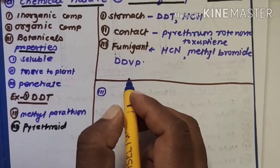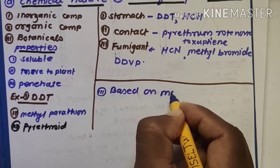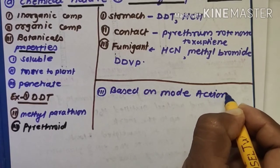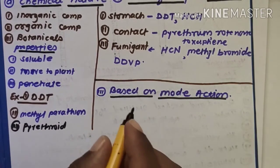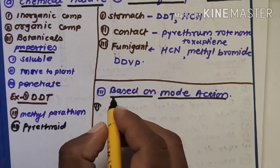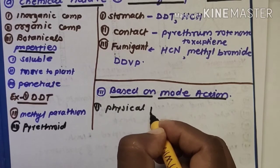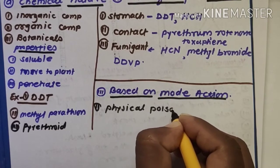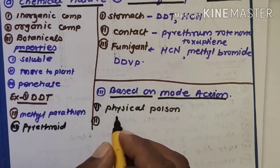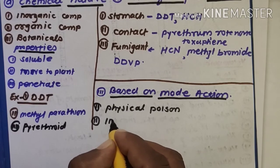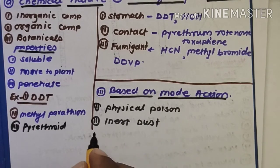The third important subclass of insecticides is based on mode of action. Under this classification, the first type is physical poison, which kills the insect by suffocation. The second type is inert dust, which causes a loss of body moisture from the insect.